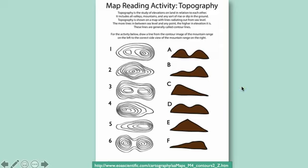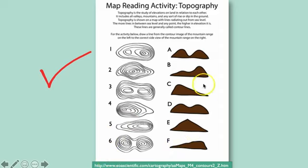Let's check our ability to interpret contour lines. On the left are landforms depicted by contour lines from a map view perspective — think of yourself as an airborne bird looking down on Earth's surface. On the right are what these landforms look like from the side, also known as a cross-section or profile view. Please pause the video and quiz yourself by matching the numbered landforms on the left with their lettered equivalent on the right.